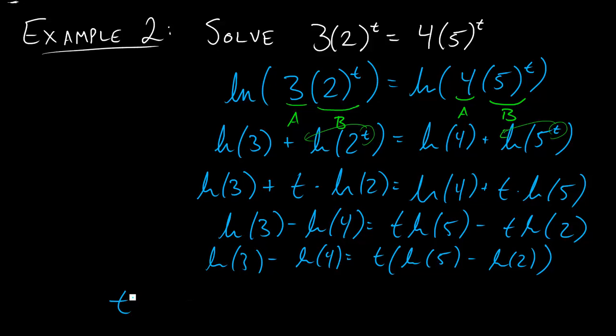And so to finally solve for t we can say t is equal to (ln(3) - ln(4)) divided by (ln(5) - ln(2)). And so if you plug that into your calculator you'll get t is about equal to negative 0.314. So about negative 0.314. If t was in years it'd be about 0.314 years before the time you set for t equals 0.